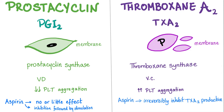Prostacyclin is secreted by the vascular smooth endothelium. Thromboxane A2 is secreted by thrombocytes — from their membrane, specifically the membrane phospholipid, the lipid bilayer. Similarly, prostacyclin is made from the cell membrane of the smooth endothelium.